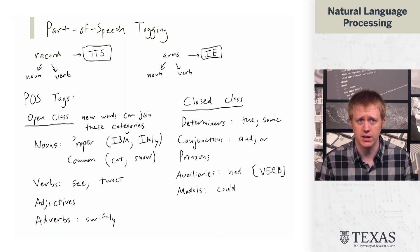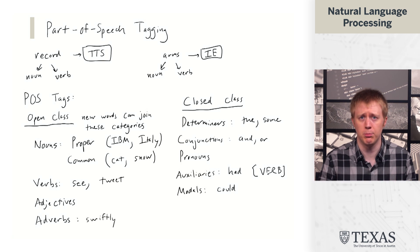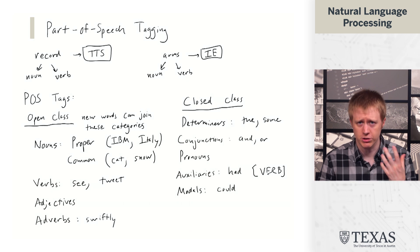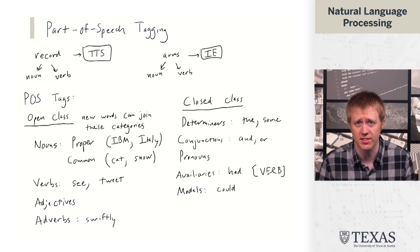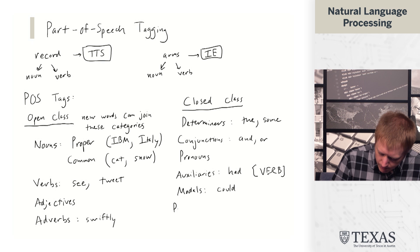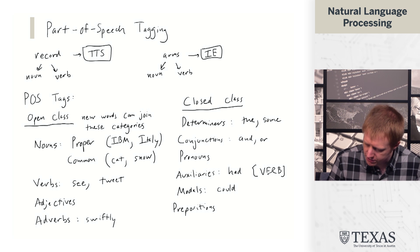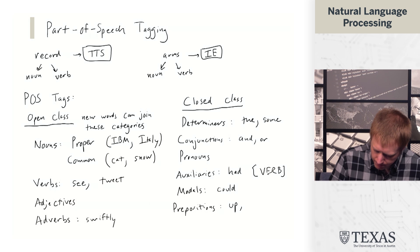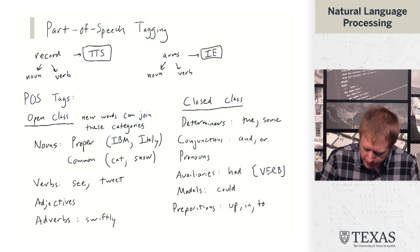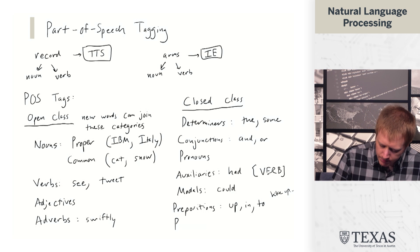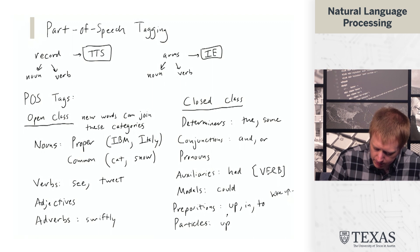These are both types of verbs that typically get tagged in a different fashion. They're closed class because we're not always coming up with new constructions surrounding different types of modality or different ways of expressing tense. The last two I'll list here are prepositions, things like up, in, to. For example, when you say hike up a mountain, that's a preposition.